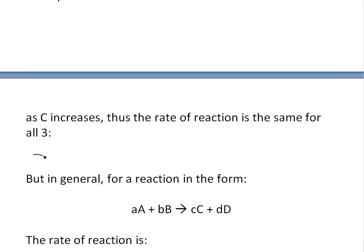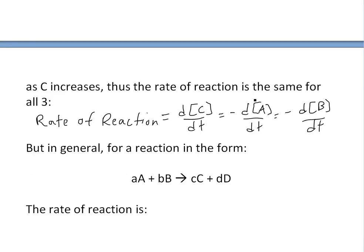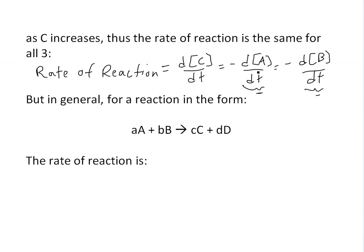This would be written as: rate of reaction equals d[C]/dt equals negative d[A]/dt equals negative d[B]/dt. Like I stated before, you're decreasing in A, so this is going to be a negative number, but then we put the negative sign so the rate of reaction is positive. Two negatives make a positive.